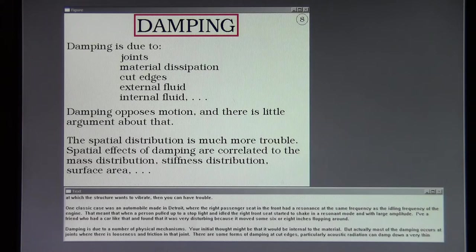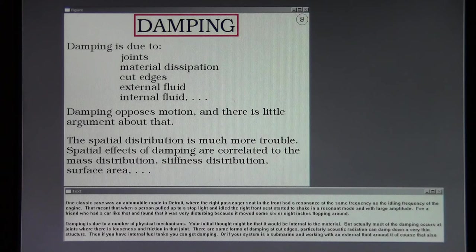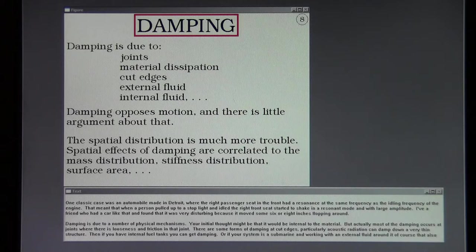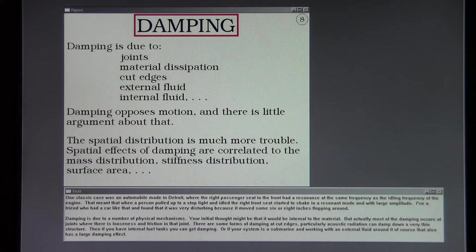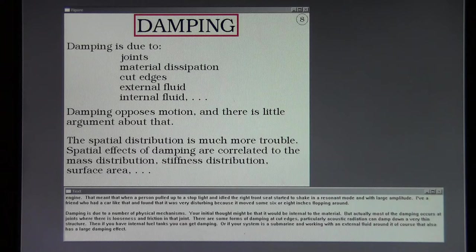One classic case was an automobile made in Detroit where the right passenger seat in the front had a resonance at the same frequency as the idling frequency of the engine. That meant that when a person pulled up to a stoplight and idled, the right front seat started to shake in a resonant mode and with large amplitude. I have a friend who had a car like that and found that it was very disturbing because it moved some six or eight inches flopping around.